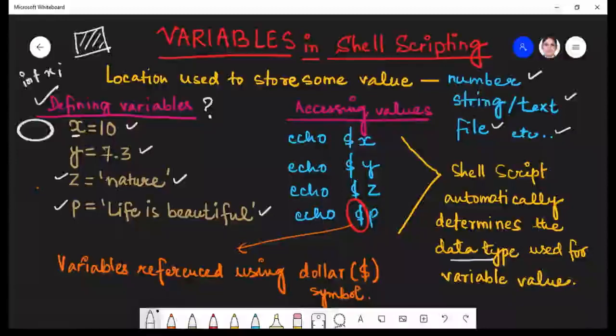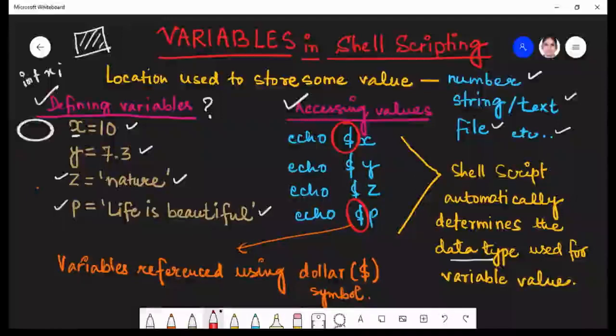Now this was about defining variables. Now how to access the values? To access the value, we have to use the command echo in which we will be using this dollar symbol. So this dollar symbol is used before the variable name. Variables are referenced using the dollar symbol. So echo space dollar symbol and then we will write the name of the variable, and then only it is going to give you the value of the variable.